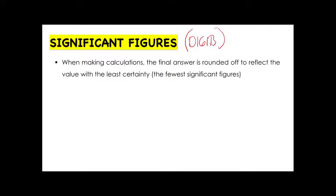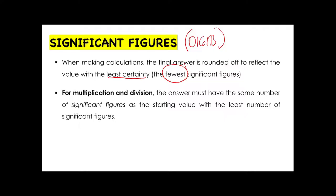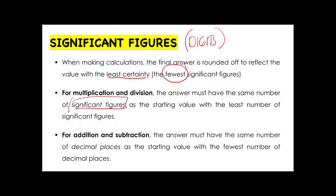For calculations, the final answer is rounded off to reflect the value with the least certainty — that value with the least certainty is the value with the fewest significant figures. For multiplication and division, the answer must have the same number of significant figures as the starting value with the least number of significant figures. For addition and subtraction, the answer must have the same number of decimal places as the starting value with the fewest number of decimal places.